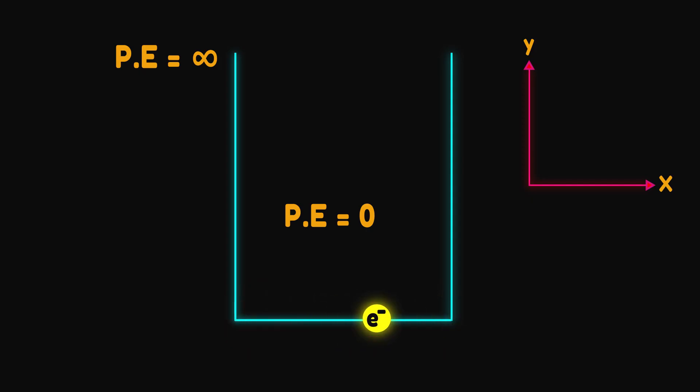In this context, the solutions of the Schrodinger equation are very simple. As you see in this equation, the possible energies are quantized. Planck's constant and the mass of the electron are constant numbers. So the energy is inversely related to the square of the length of the box.